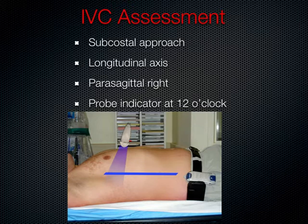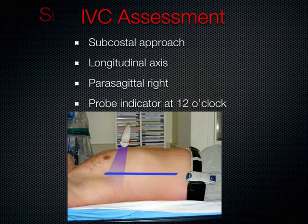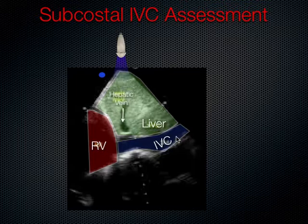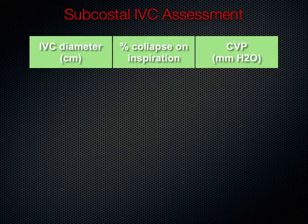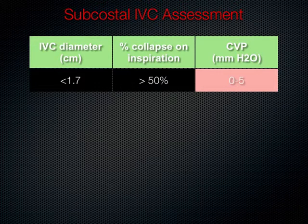From the subcostal location, rotate the transducer with the indicator toward the patient's head — 12 o'clock — giving a parasagittal view. Parasagittal right gives us the inferior vena cava. We can see the IVC draining into the right atrium, running underneath the liver, with the hepatic vein draining into the IVC. The assessment point is back from the hepatic vein, where we evaluate how much the IVC collapses during inspiration to assess hydration status.